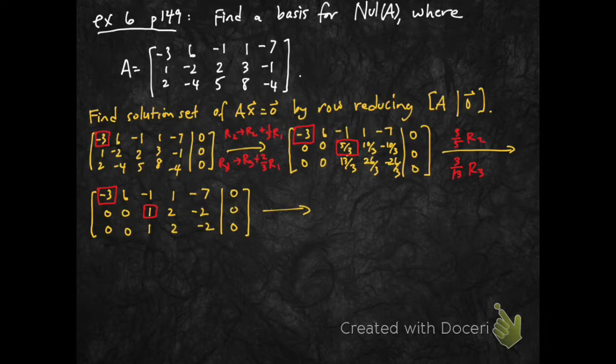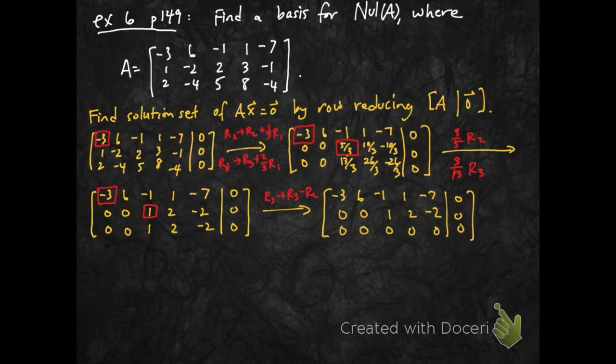And so, now, I'm going to use this pivot 1 to kill off the 1 below it. I can do that with a row 3 replacing, replaced by row 3 minus row 2, in which case, I get all 0s in that last row.